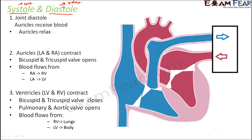In the first step of this blood flow, both auricles receive blood and while receiving blood they remain in a relaxed state. That is why this stage is called joint diastole — because both the auricles and the ventricles are in the relaxed state.